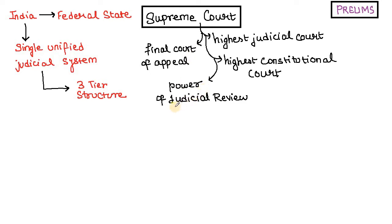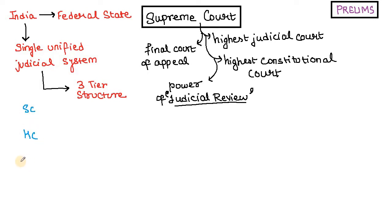The Supreme Court also has the power of judicial review, which we will study in this lecture. India is a federal state — federal cooperation between the Union and the states — and it has a single unified judicial system. I told you about the three-tiered pyramidal structure: at the top we have the Supreme Court, then we have the High Court, and then we have the district courts and subordinate courts.